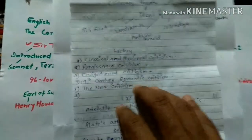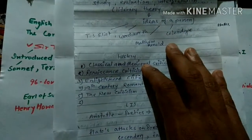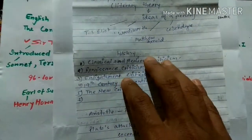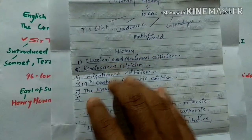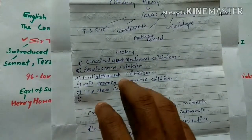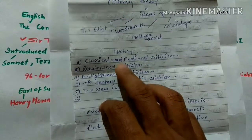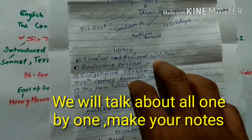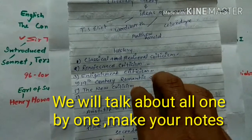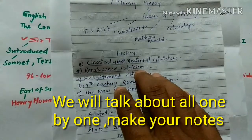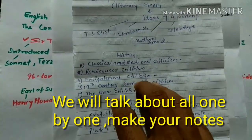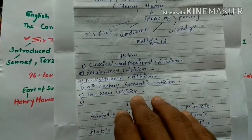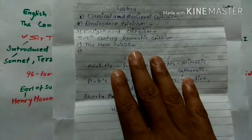Now let's look at the history of literary criticism. I have divided it into five parts: classical and medieval criticism — the time of Plato and Aristotle — then Renaissance criticism, enlightenment criticism, 19th century Romantic criticism, and the new criticism.